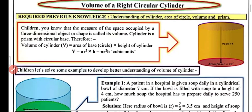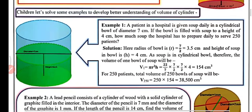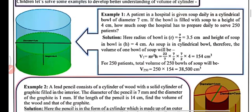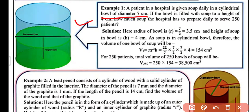Now let's solve some examples for better understanding of the volume of a cylinder. In example 1, a patient in the hospital is given soup daily in a cylindrical bowl of diameter 7 cm. If the bowl is filled with soup to a height of 4 cm, how much soup does the hospital have to prepare daily to serve 250 patients?